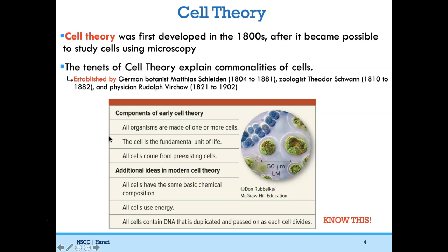The first tenet of cell theory is that all organisms are made of one or more cells. The cell is the fundamental unit of life. All cells come from pre-existing cells — this was from Virchow, and is directly against spontaneous generation. Building on chapters two and three, all cells have the same basic chemical composition: the same lipids, proteins, carbs, and nucleic acids. All cells use energy, and all cells contain DNA that is duplicated and passed on as each cell divides.